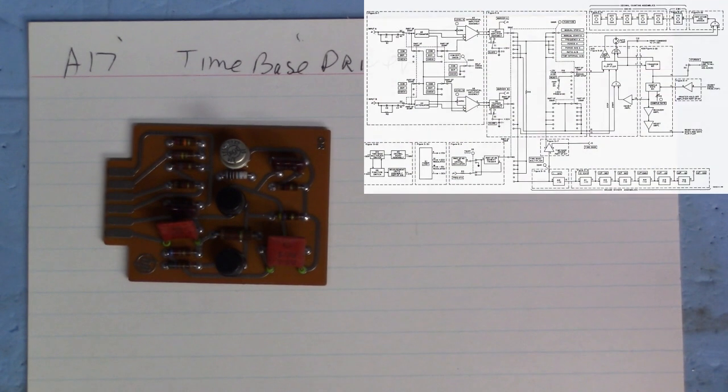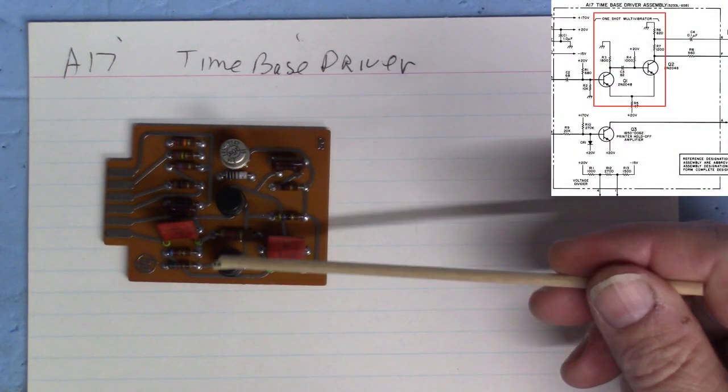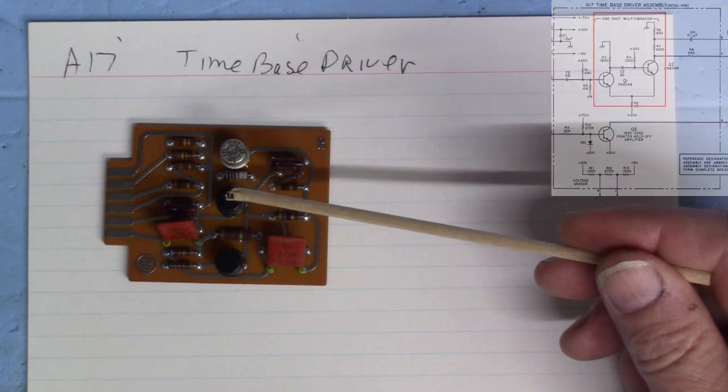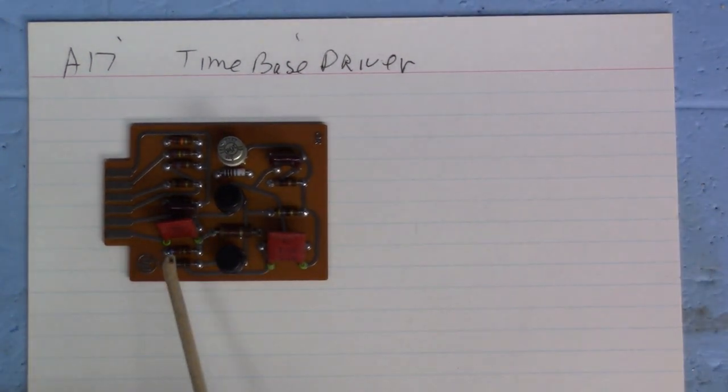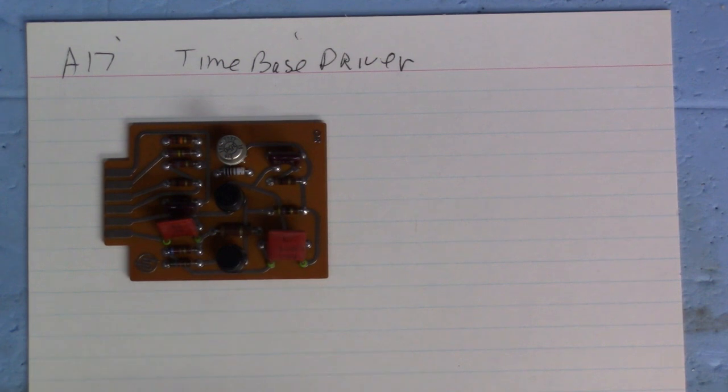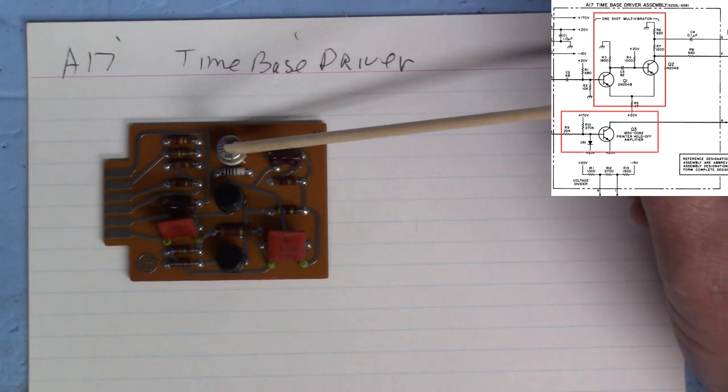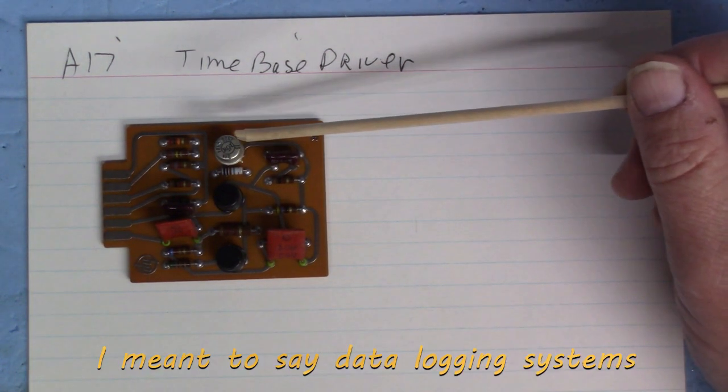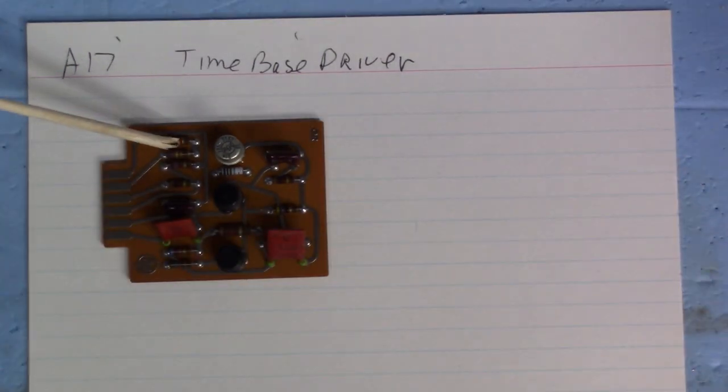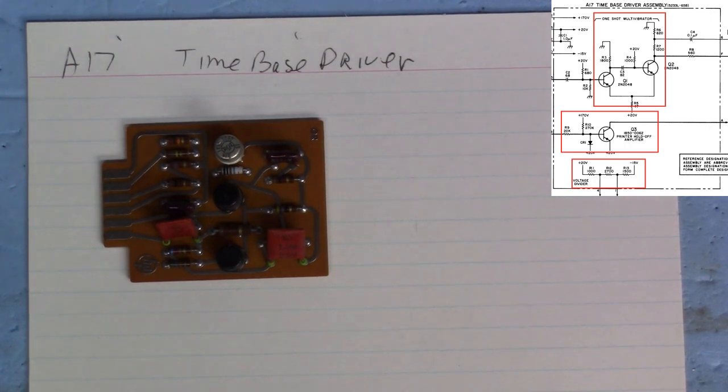Now back down to the time base driver. Again this is a really simple card, not much on this one but it's pretty varied. We have the one-shot multivibrator here that controls the time base. Again you see those ferrite beads and really tight tolerances. Again we have that one microfarad funny looking cap which is really an odd one to see in these things, but they all look okay. And the other thing we have on this is the printer hold off amplifier over here, and that holds the system off until the printer is finished printing. This is about the time that HP started integrating all sorts of printer functions and database systems. And the last little bit is this little bunch of resistors here which is a voltage divider that goes somewhere off on another board. The board's in fine shape, I don't think there's going to be any problem with this one.